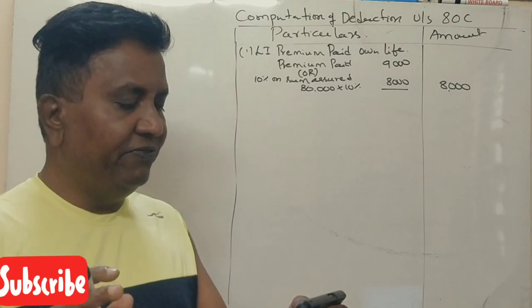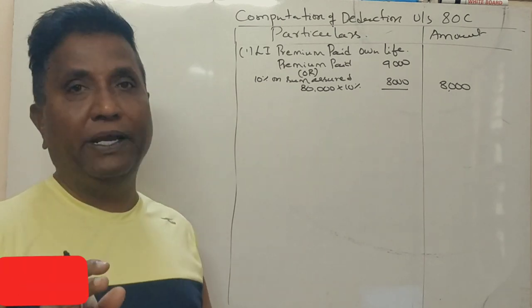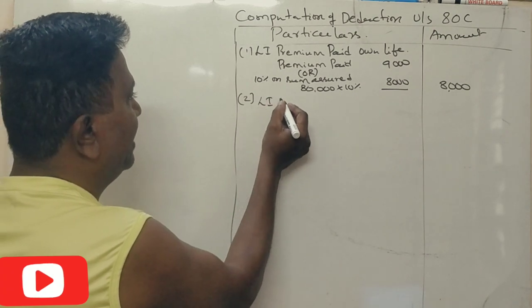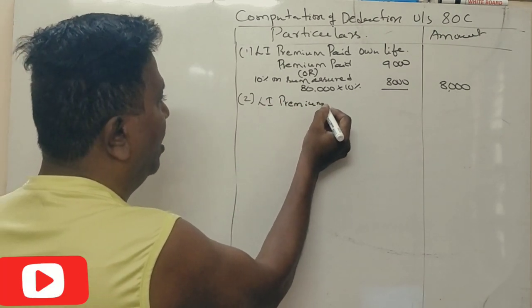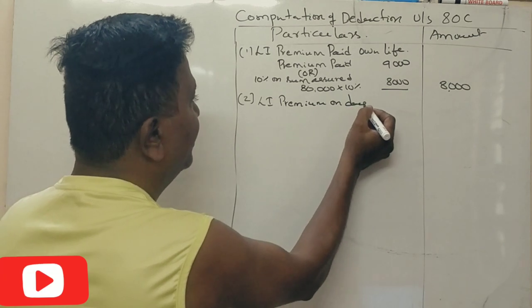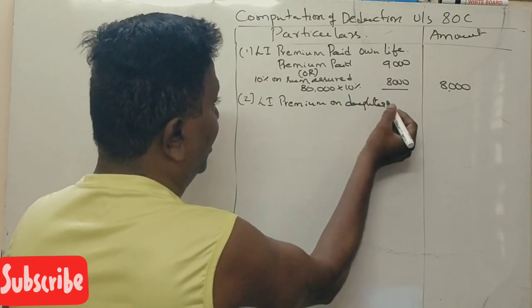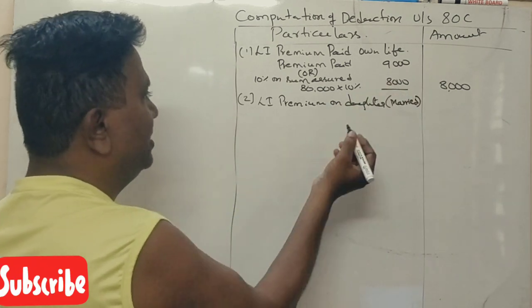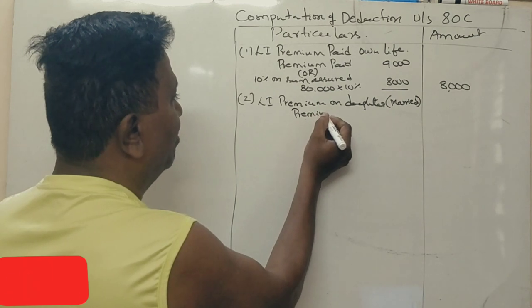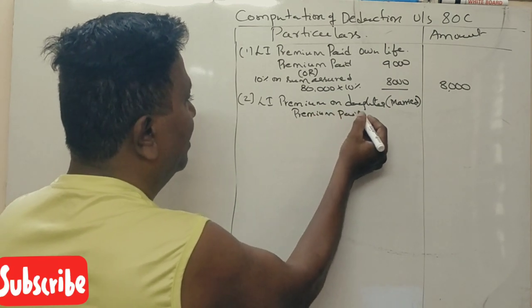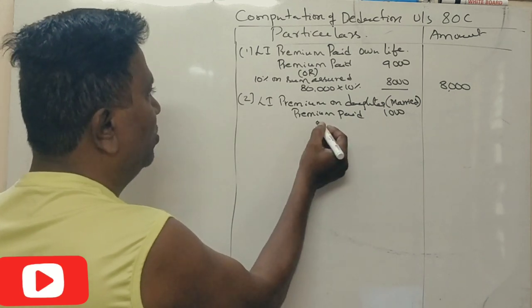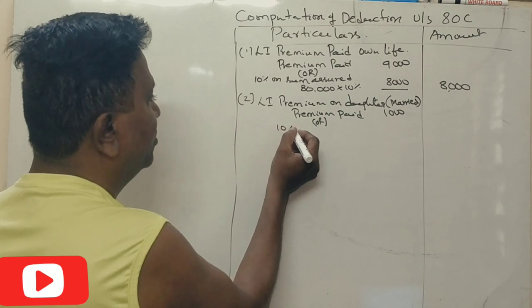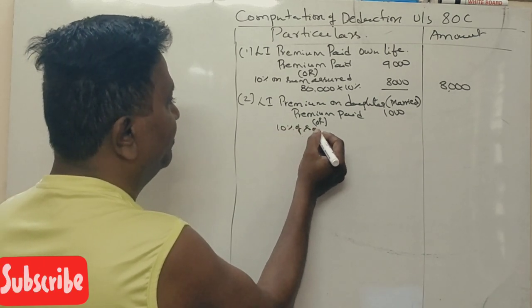Life insurance policy Rs. 15,000 married daughter's life, premium amount paid is 1,000. Now, LIC premium on daughter's married daughter, actual payment is 1,000. So 10% of sum assured, we are giving 1,000 rupees as an eligible amount for deduction under section 80C.